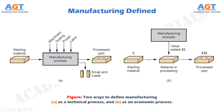Economically, manufacturing is the transformation of materials into items of greater value by means of one or more processing and assembly operations, as depicted in figure B. The key point is that manufacturing adds value to the material by changing its shape or properties, or by combining it with other materials that have been similarly altered. The material has been made more valuable through the manufacturing operations performed on it.